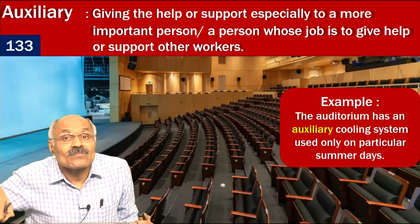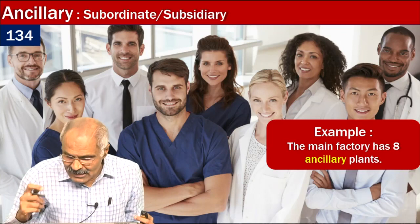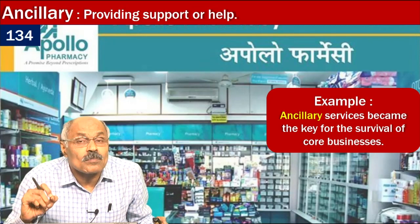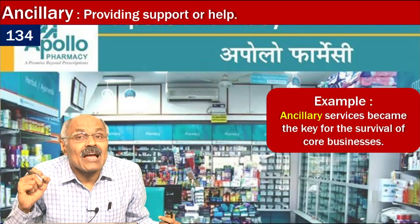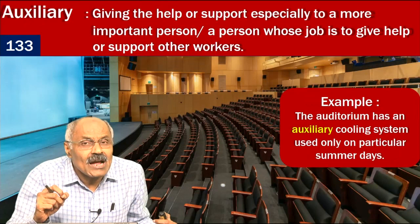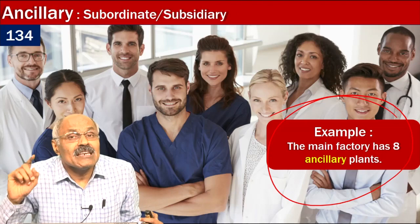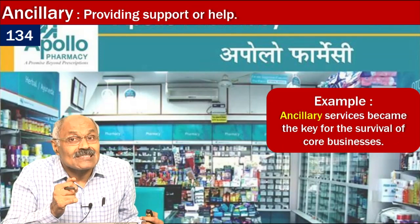'Ancillary' means supporting units around a main industry or factory. For example, the Apollo Group's main aspect is corporate hospitals, but their pharmaceutical units and diagnostic units are all called ancillary units. The Apollo Group has thousands of pharmacies — these pharmacies and diagnostic centers are ancillary units as far as Apollo Group is concerned.